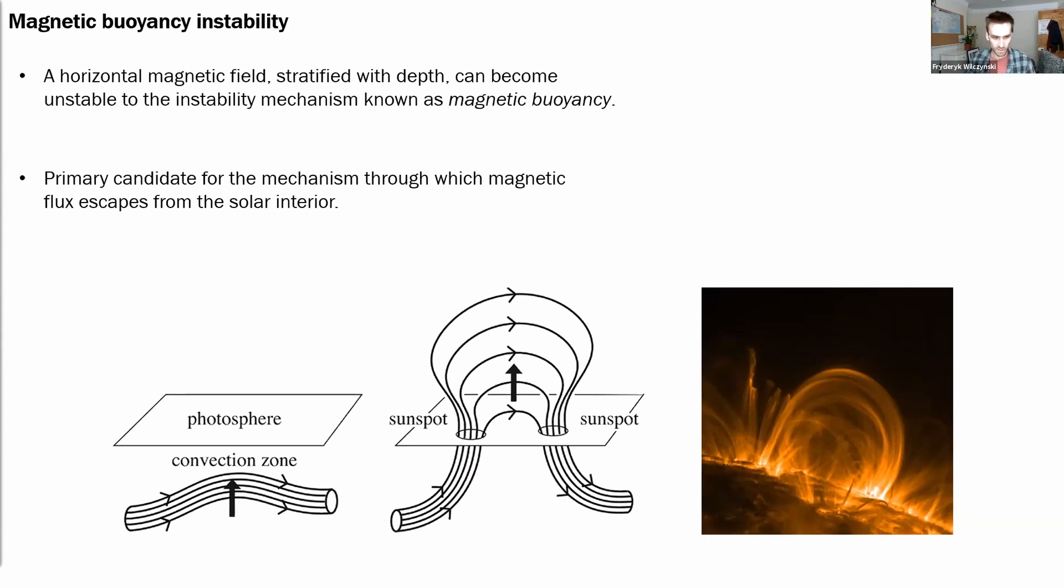It manifests on the solar surface in forms of coronal loops and sunspots and many other magnetic phenomena.